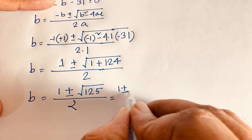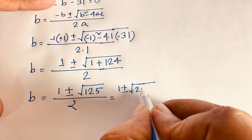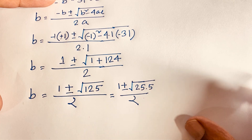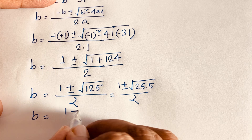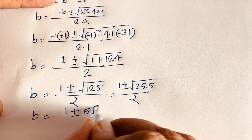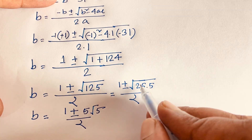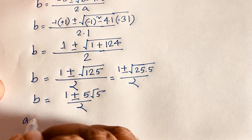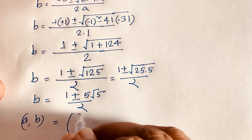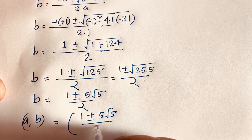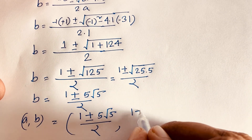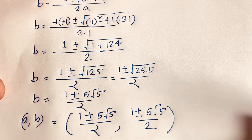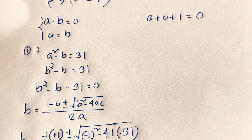We simplify: square root of 125 equals square root of 25 times 5, which is 5 root 5. So V equals 1 plus or minus 5 root 5 over 2. Since A equals V, our final answer for Case 1 is A equals V equals 1 plus or minus 5 root 5 over 2.